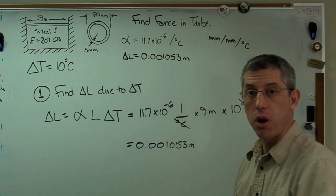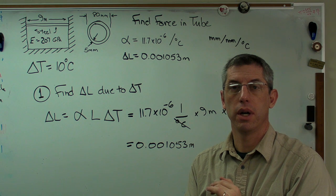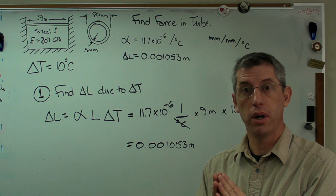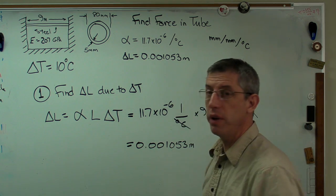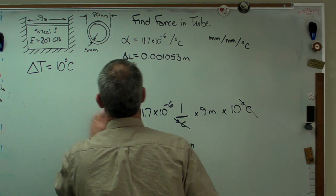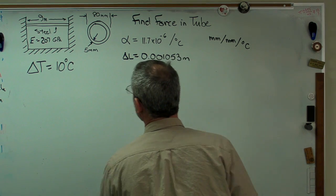So that's part one of the problem. We now know how far the bar is going to expand or how far it would expand if there were no constraints on the end, the ends were free to move. And it's a very small number. So let's find out how much force that actually generates.